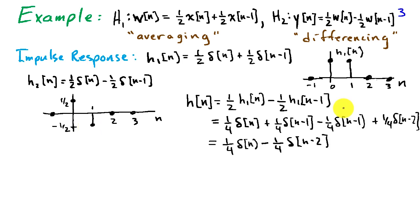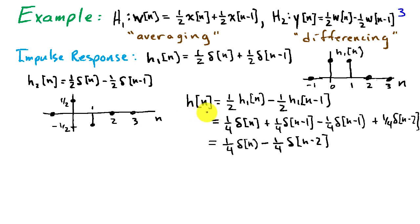To find the impulse response of the cascade of these two systems, we take the output of the first system, which is h1 of n, and apply that as the input to the second system. We replace w of n with h1 of n, and that by definition will be the impulse response of the cascade combination. Substituting for h1 of n and simplifying, we find that h of n is 1/4 delta of n minus 1/4 delta of n minus 2.